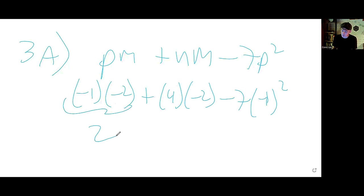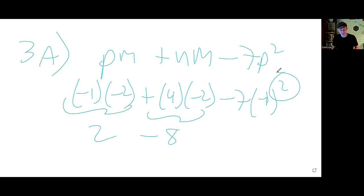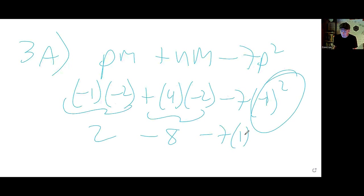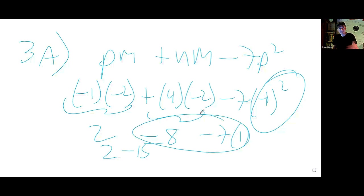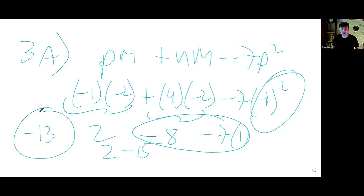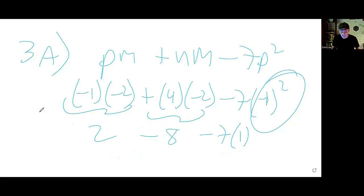The first term is 2. The middle cluster is negative 8. In the last term, the double negatives do not meet because the exponent happens first — you square negative 1 to get positive 1, then multiply by 7. So it's 2 minus 8 minus 7, which gives negative 13 for 3a.